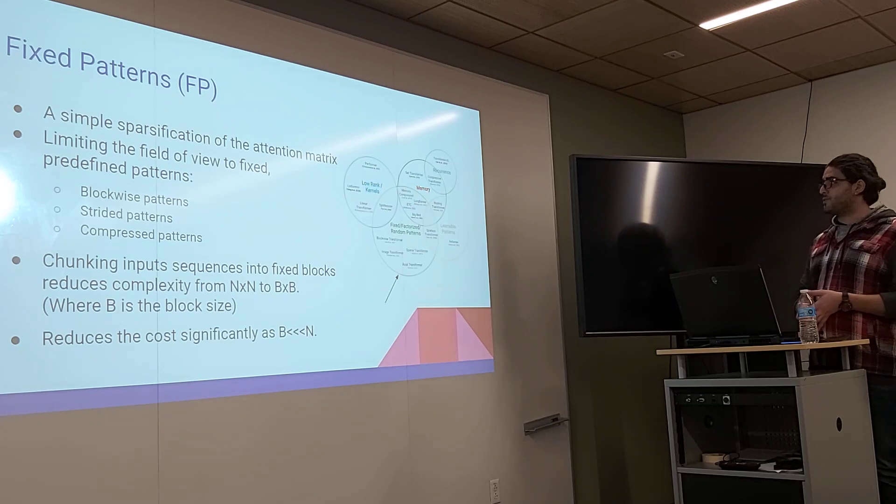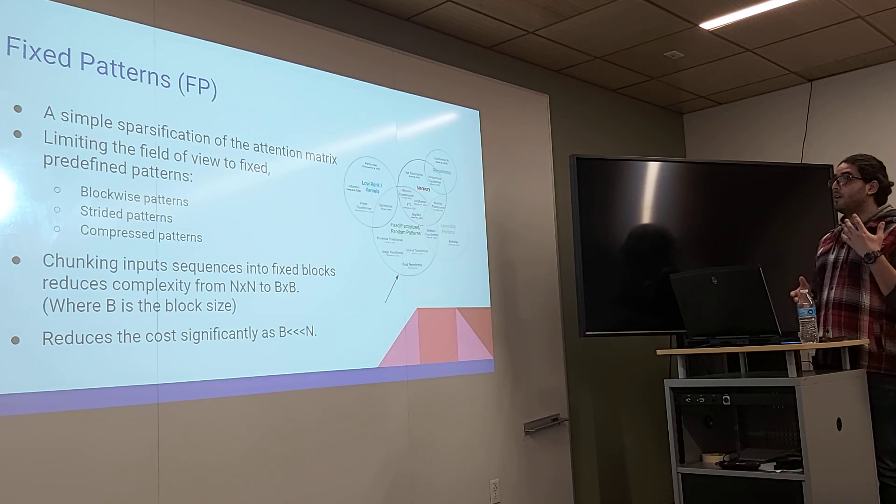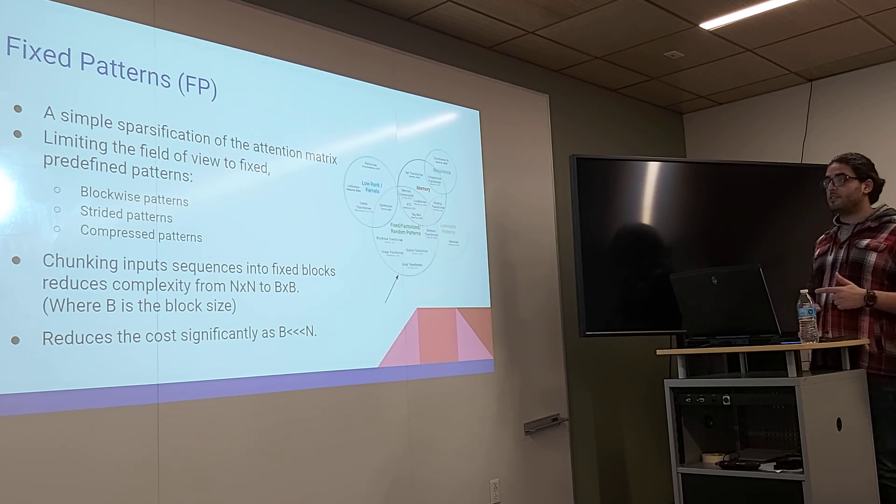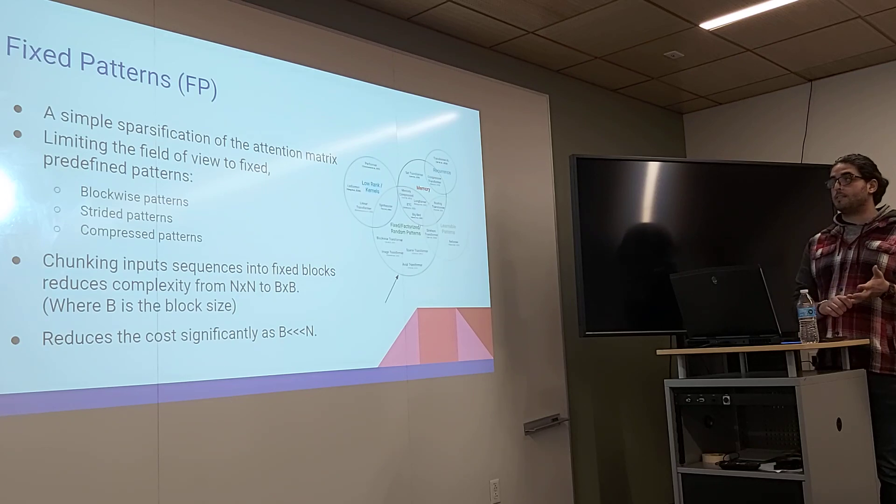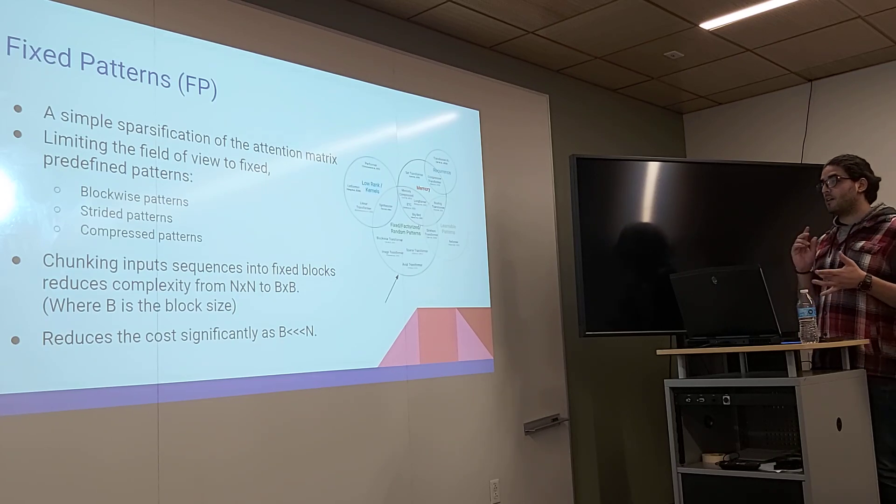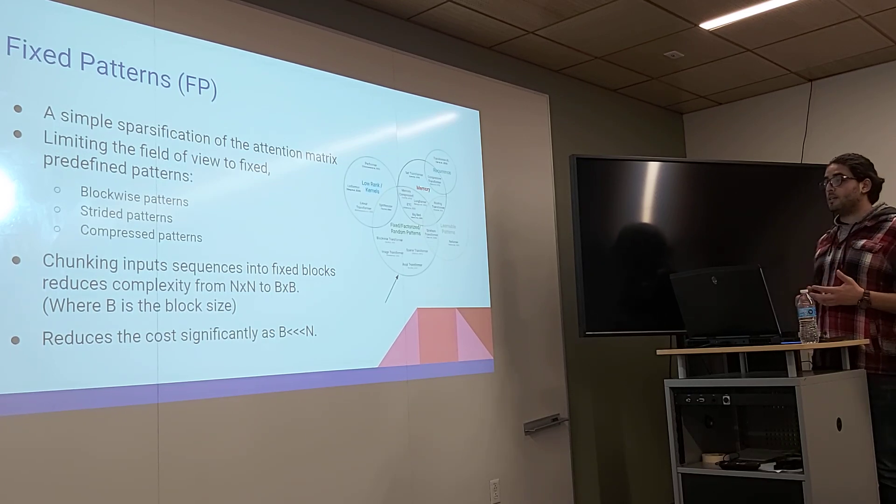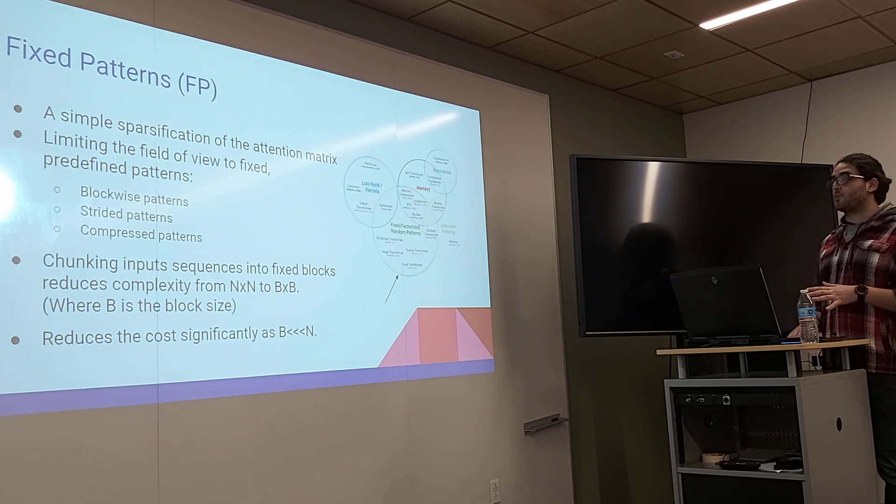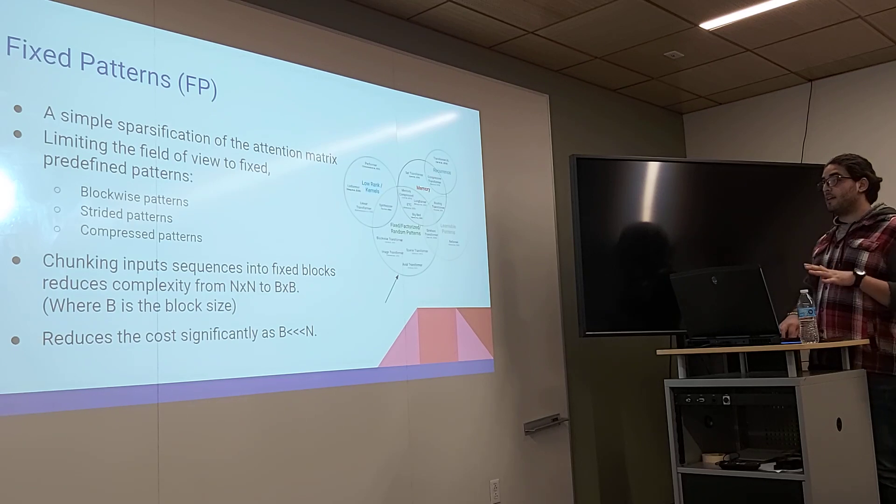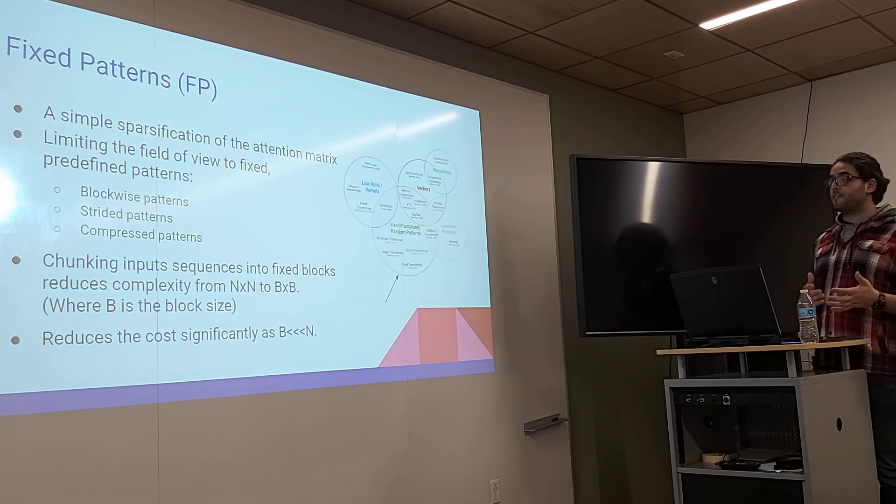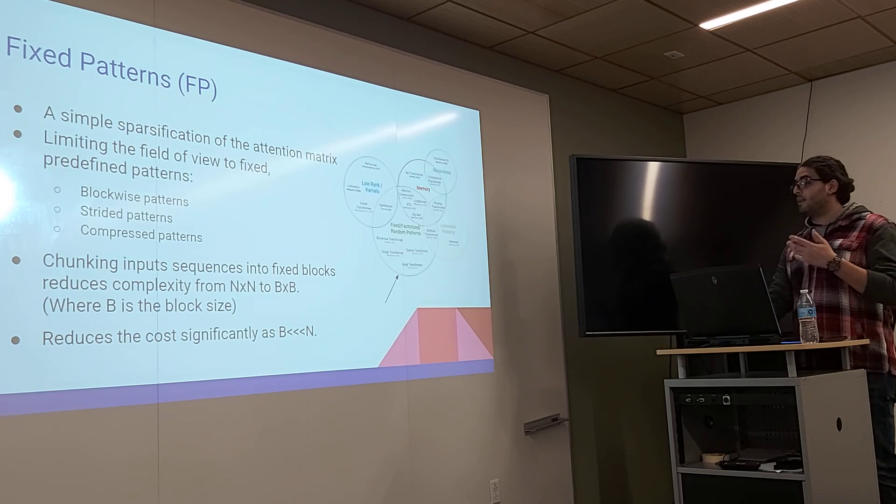We start by fixed patterns categories, which is a simple specification of the attention matrix. Here the idea is limiting the field of view to a fixed and predefined pattern. We have works that they've done like the block-wise patterns, the stride patterns, and the compressed patterns. The idea is chunking input sequence into fixed blocks by reducing the complexity from N-squared to P-squared, where P is the block size. And the effect is more prominent where P is way less than N.